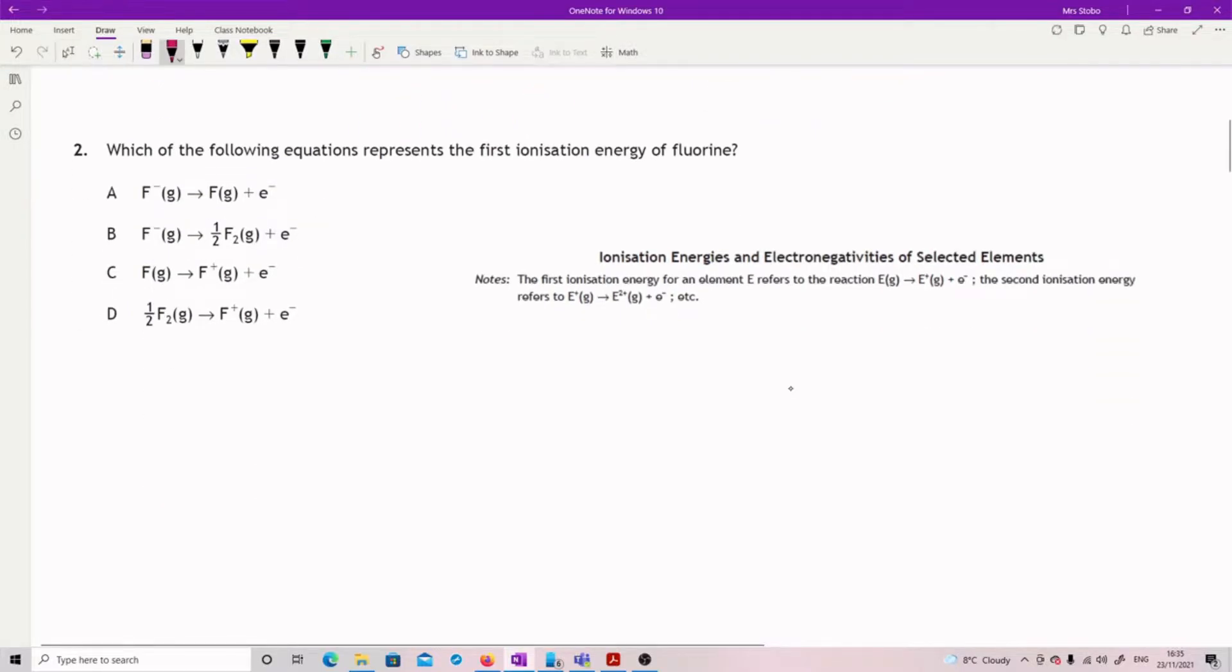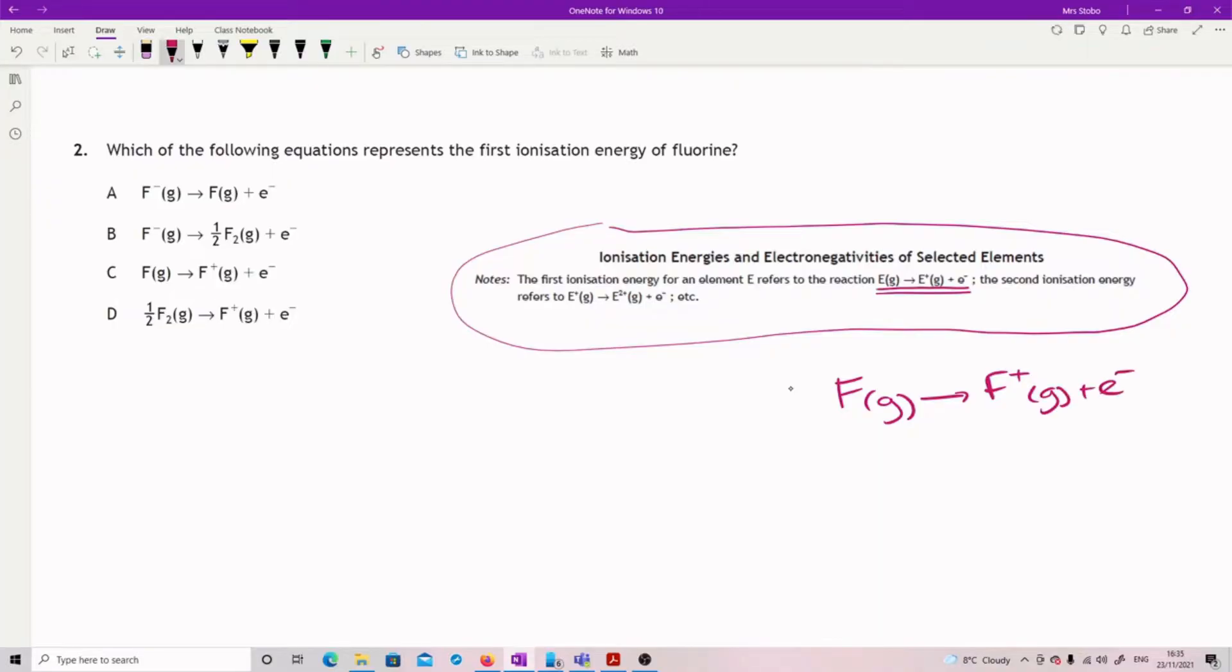Question two: which of the following equations represents first ionization energy of fluorine? You're going to go straight to your data book and look at the top of the page which has this definition. The first ionization energy of an element E refers to this reaction. I'm looking for fluorine, so that's got to be F(g) goes to F+(g) plus e-. No other options.